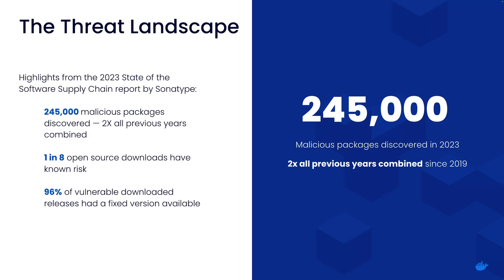To give you an idea of the threat landscape, according to the 2023 State of the Software Supply Chain report by Sonatype, there were 245,000 malicious packages detected last year alone, which is double the total found since 2019 combined. Furthermore, one in eight open-source downloads were reported to contain known risks, even though 96% of the vulnerable packages downloaded had a fixed version available at the time of download.